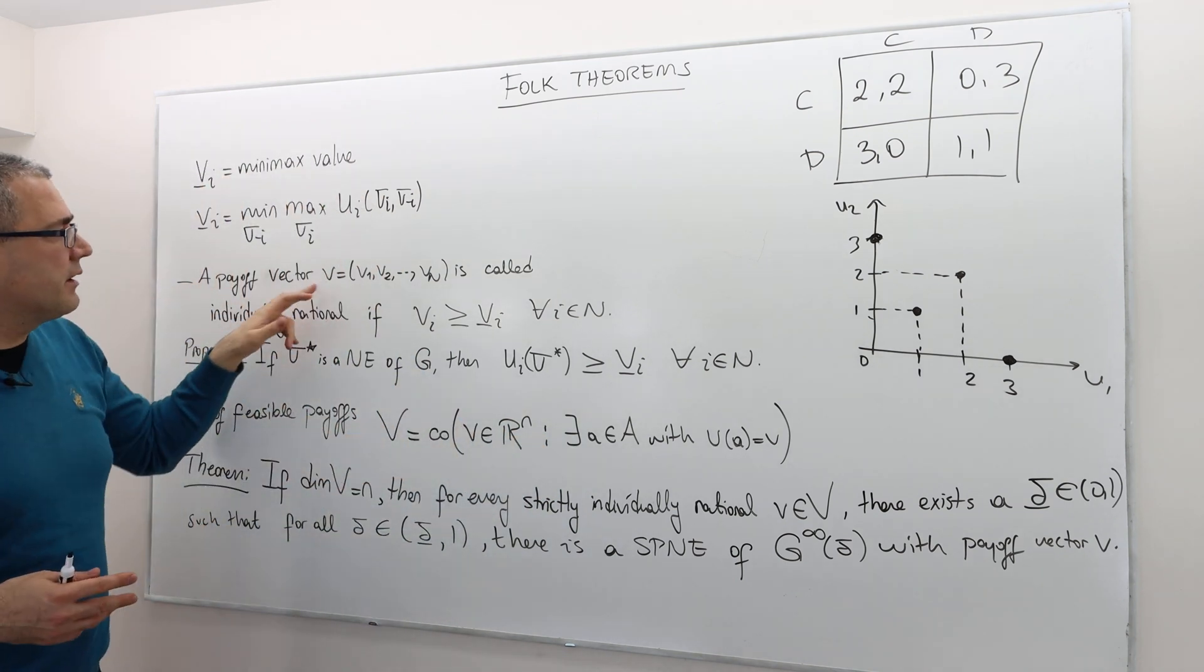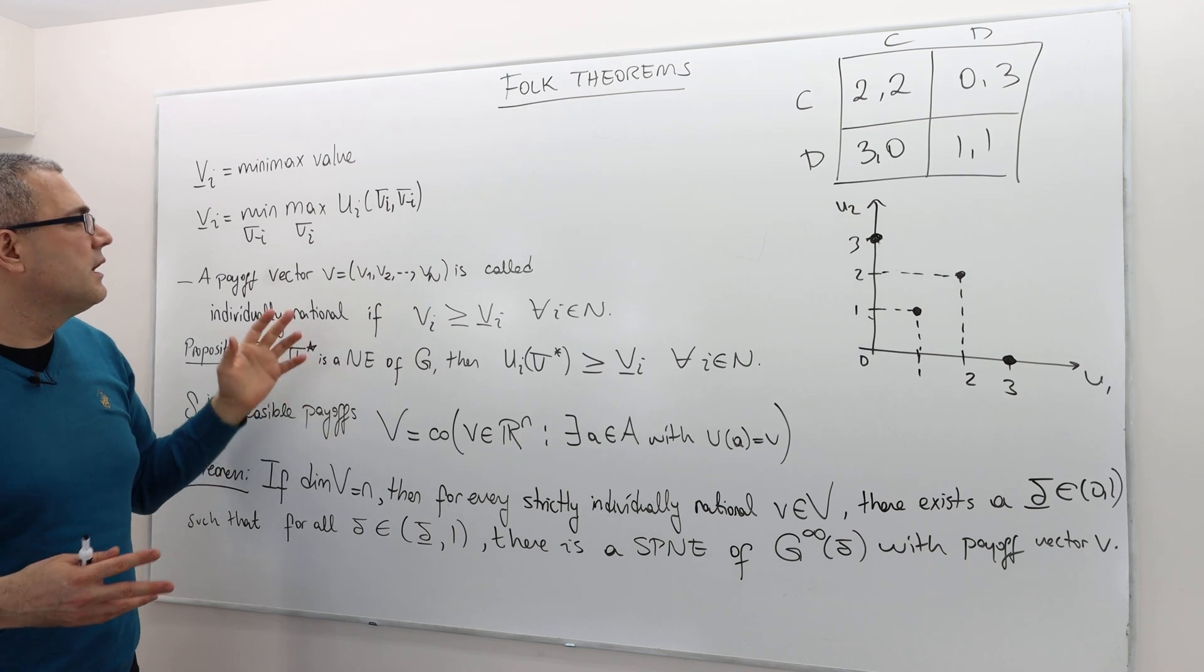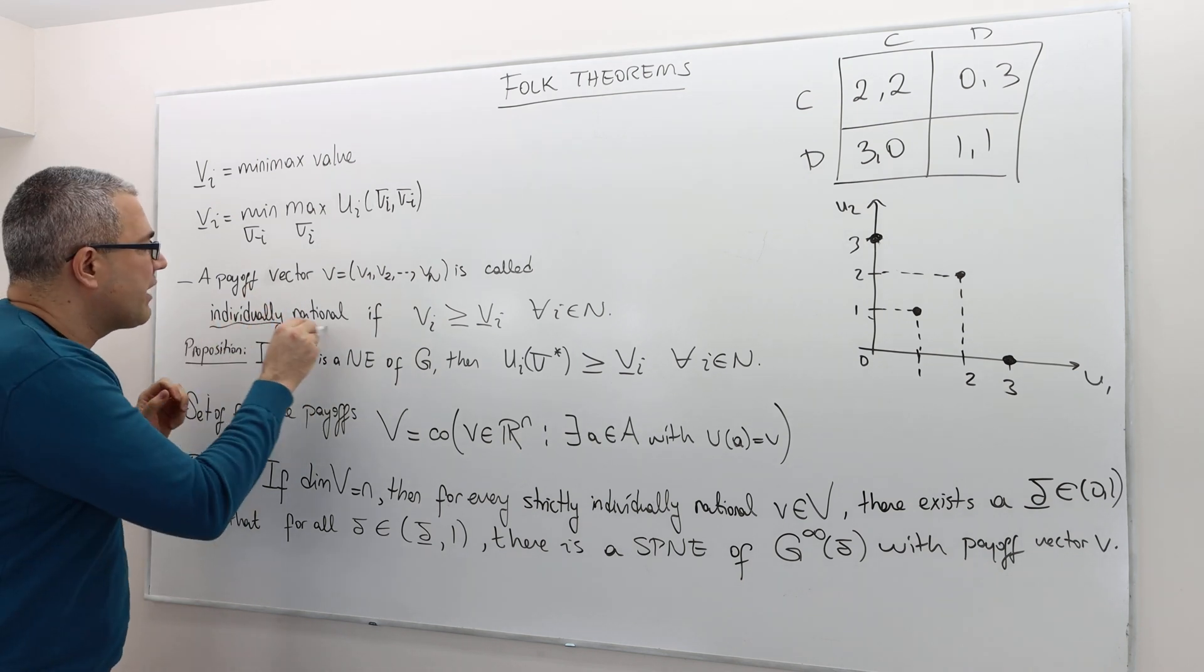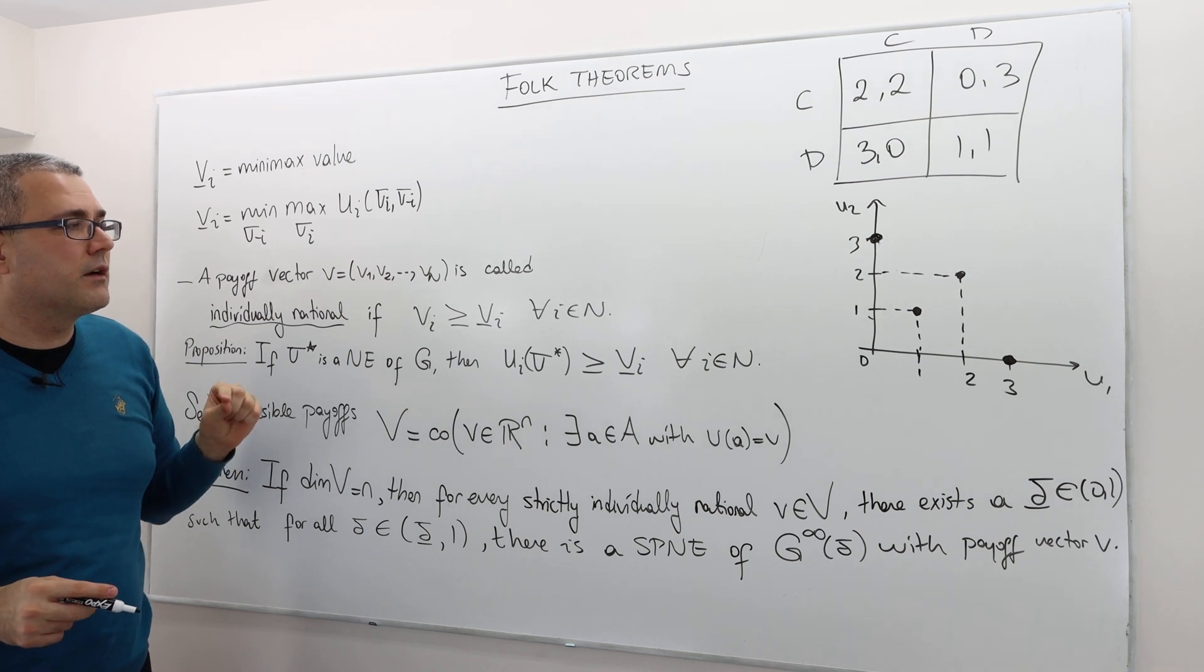All right. So a payoff vector V, which basically tells us what payoff each player gets, is called individually rational if vi is greater than or equal to vi-underbar for every i.